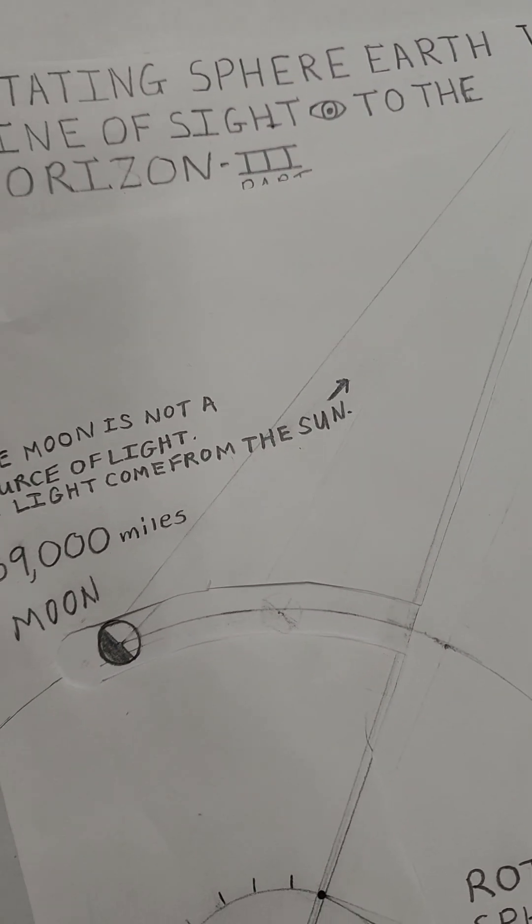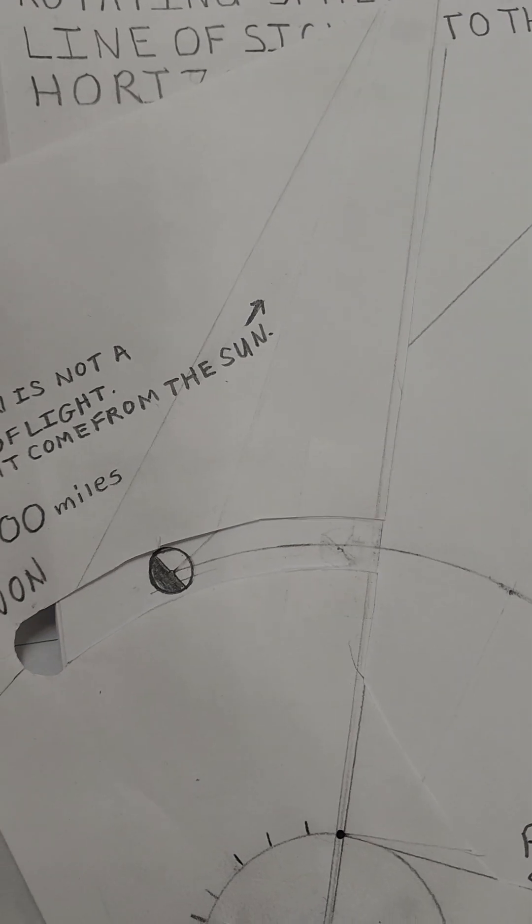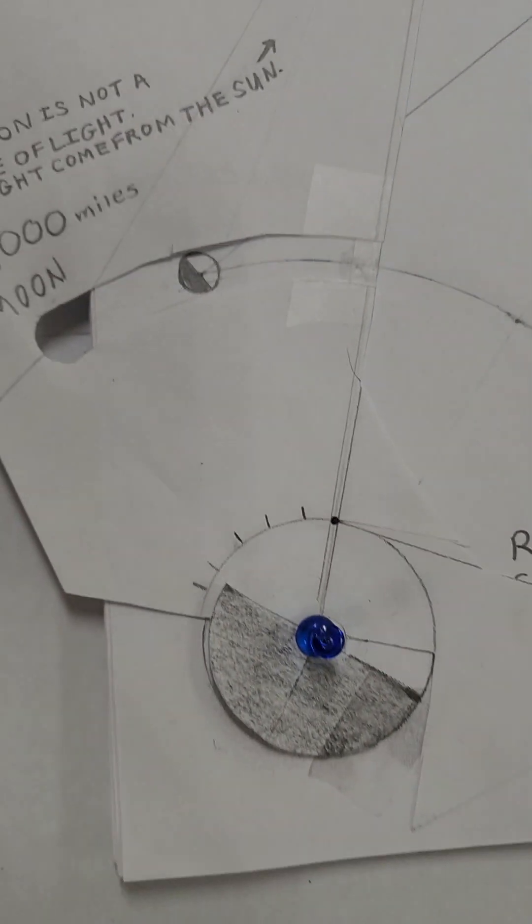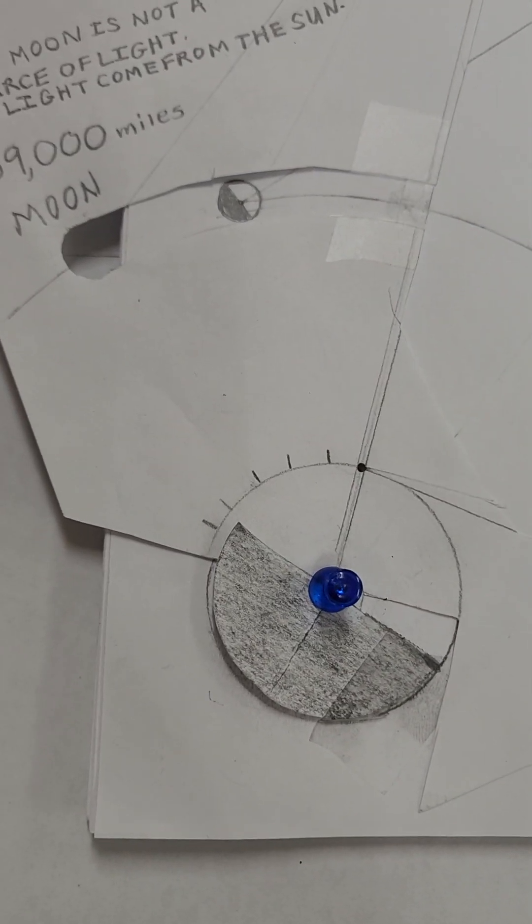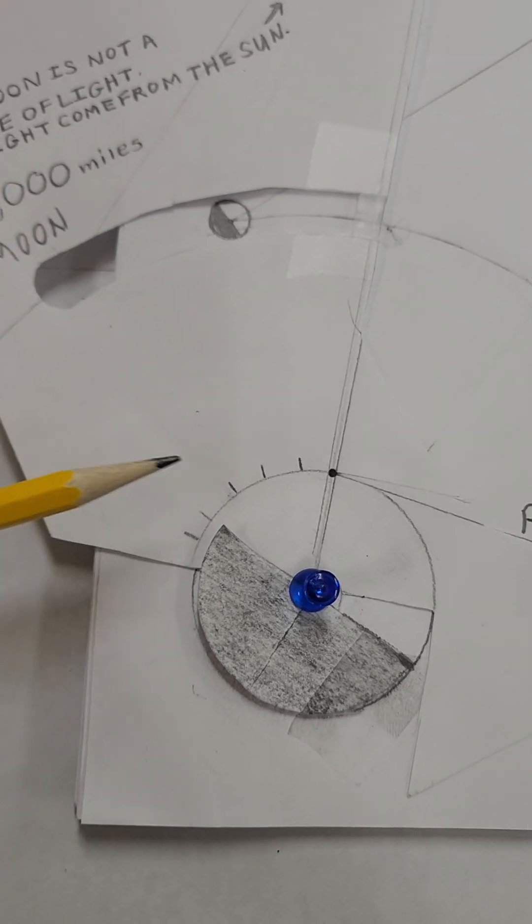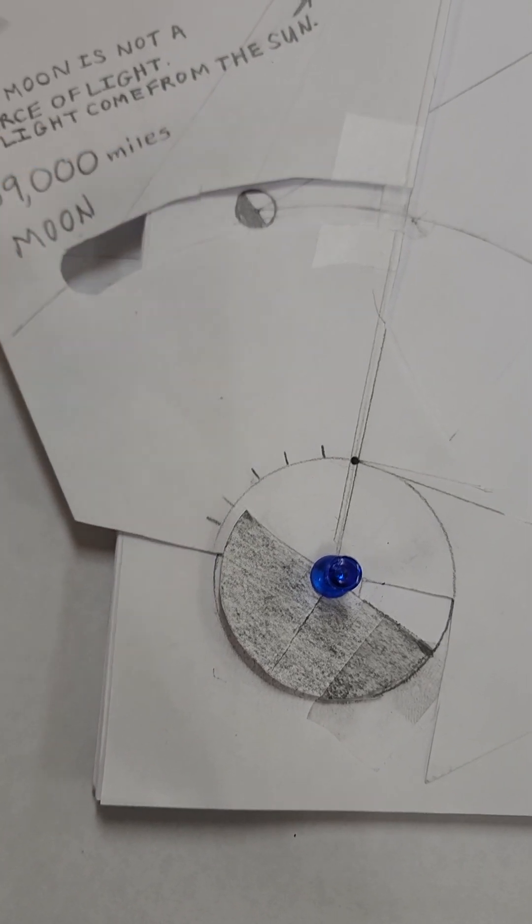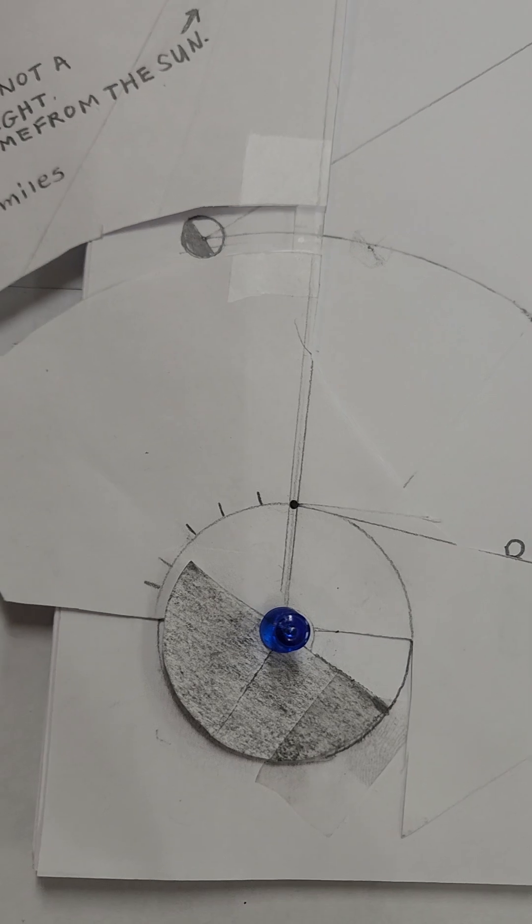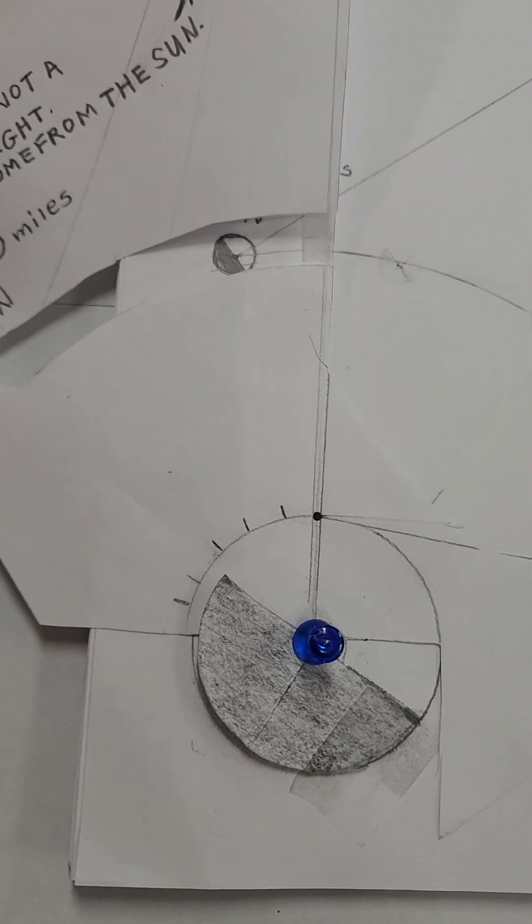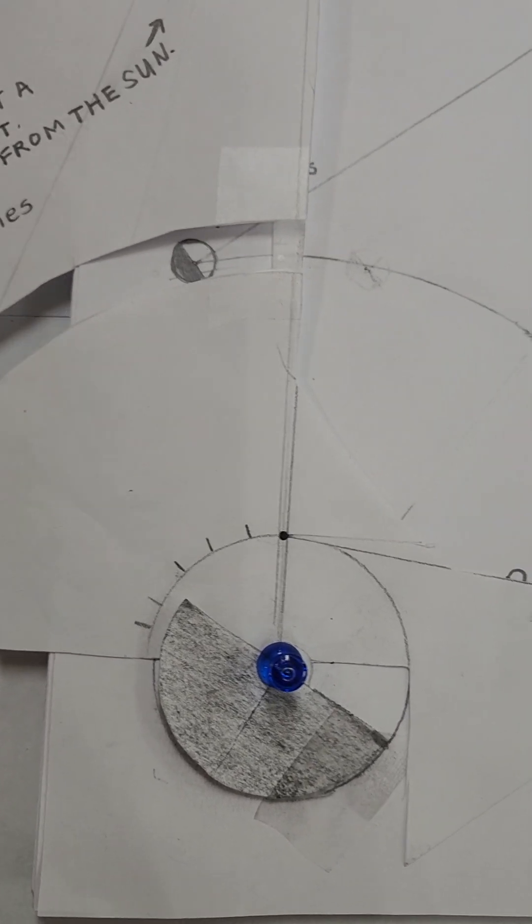Now, when you turn, when you rotate, notice what happens in relationship to you over here. What happens to that moon? It changes position. It looks like it changes position, but it doesn't.